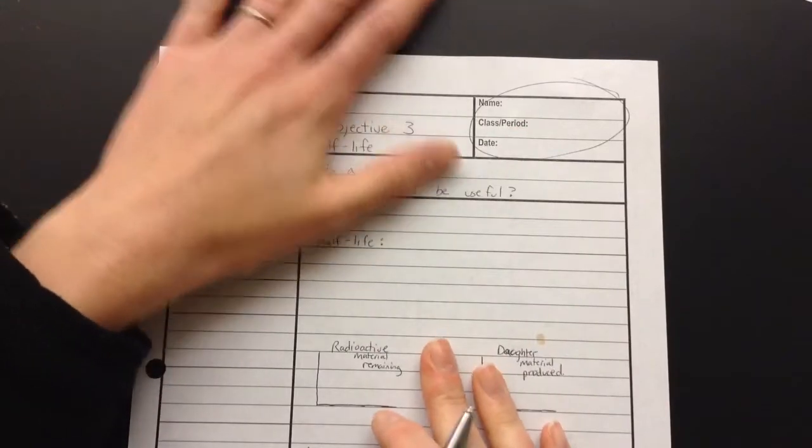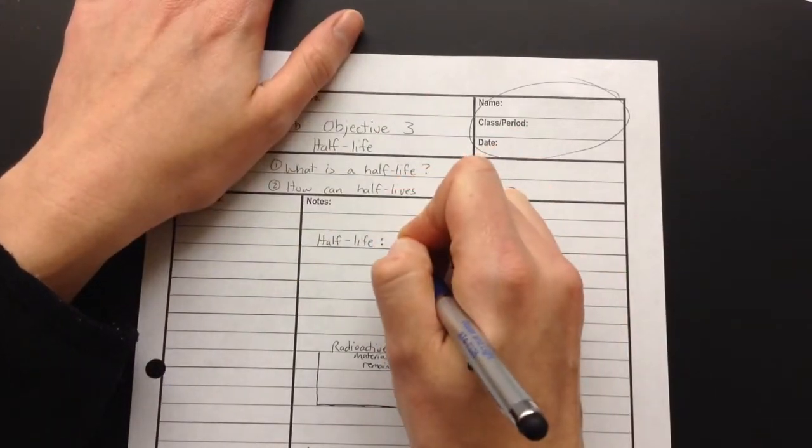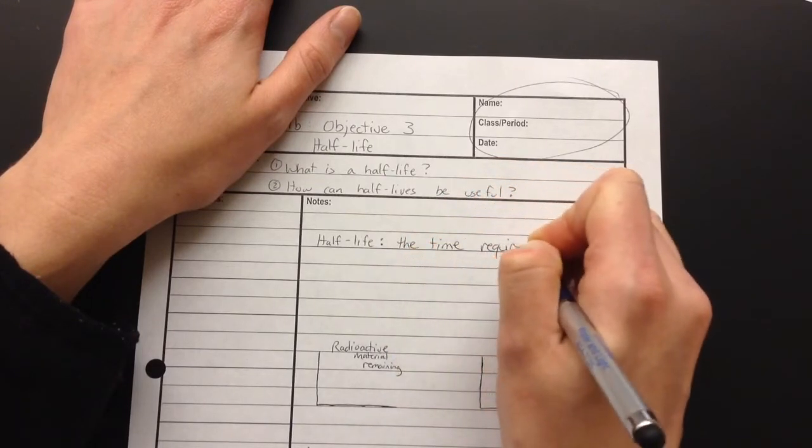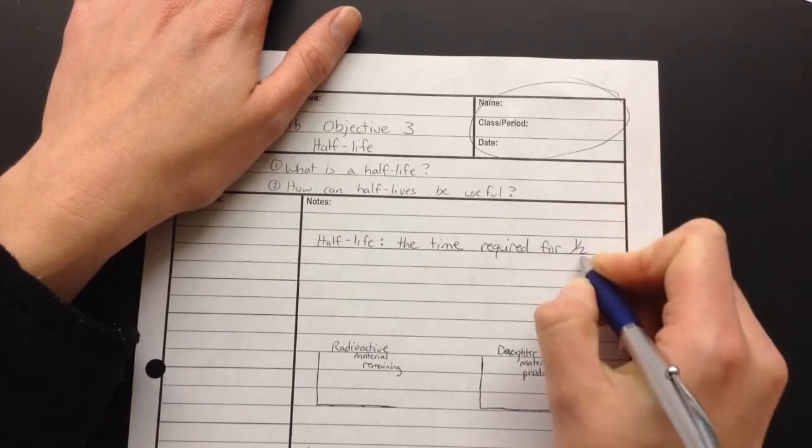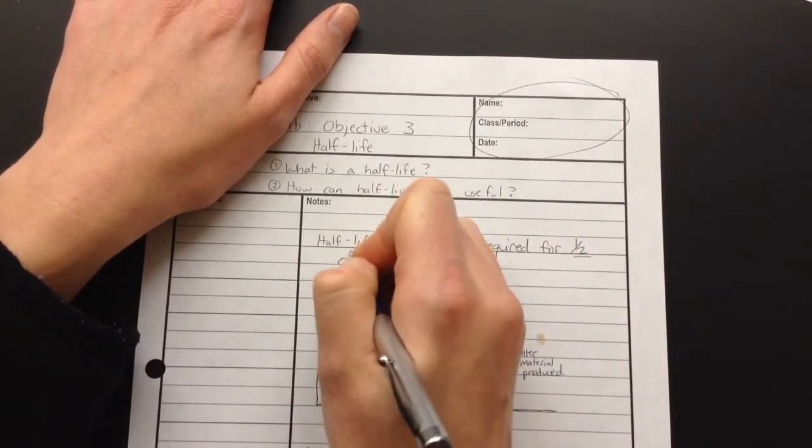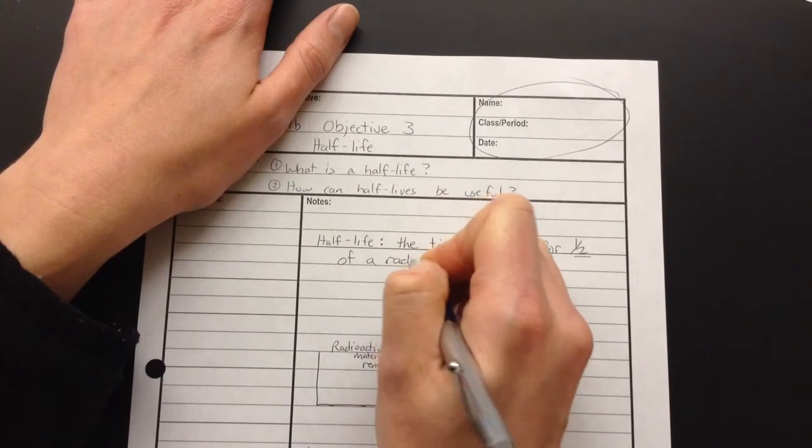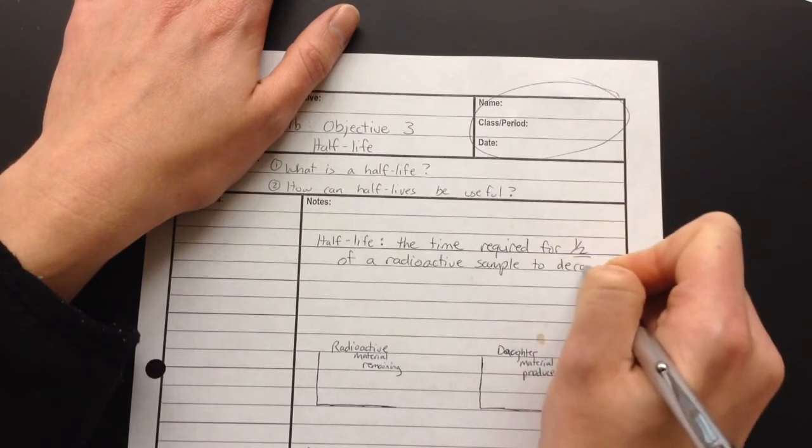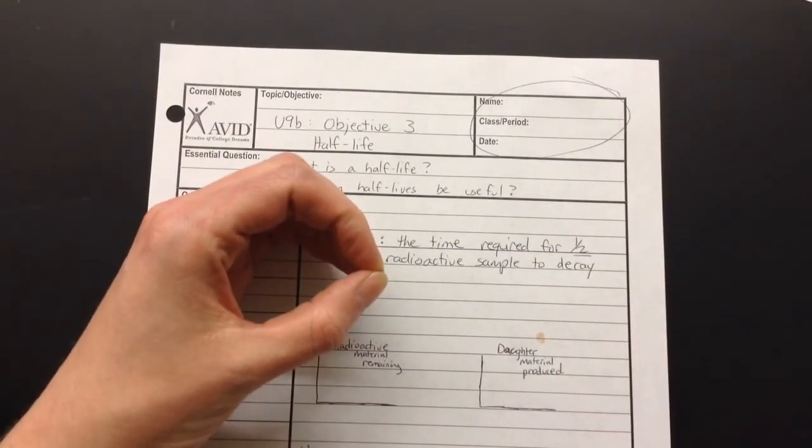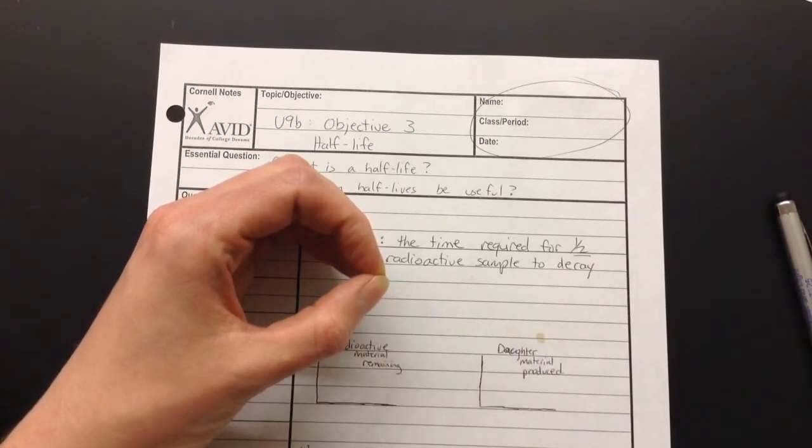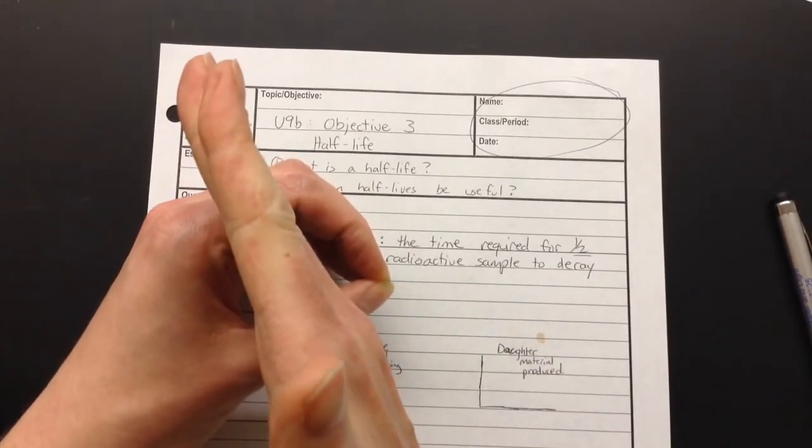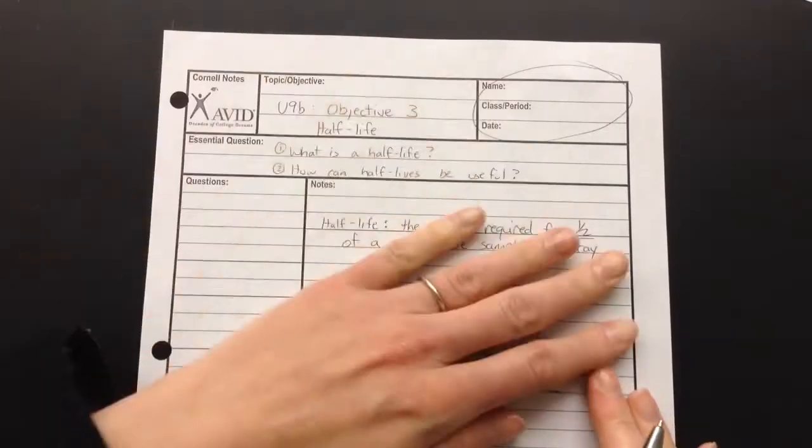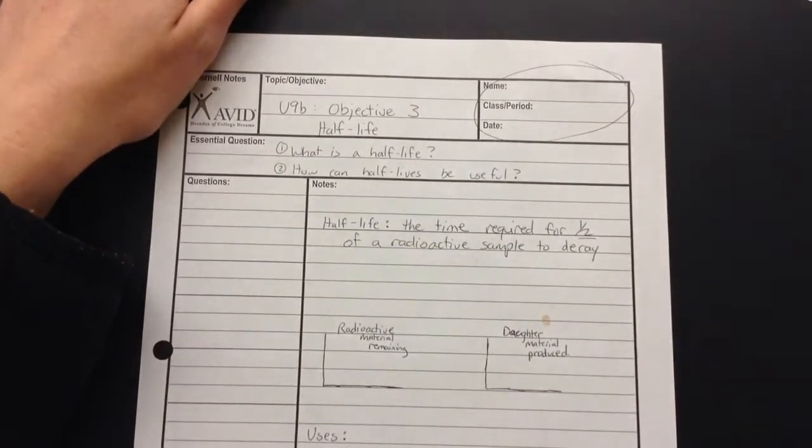So the first thing we're going to write down is the definition. And a half-life is a measurement of time. It is the time required for half, that's where it gets the term half-life, half of a radioactive sample to decay. So let's pretend we had a chunk of uranium. Uranium has a half-life. And one half-life, then half of that uranium would no longer be uranium. It would be whatever it turns into when it's done decaying. So that depends on what kind of decay.